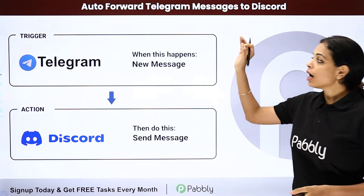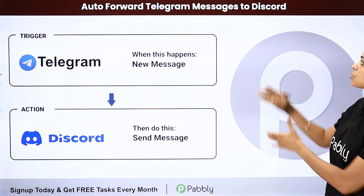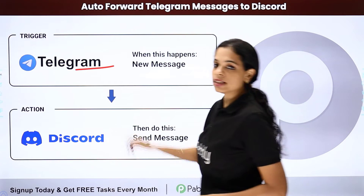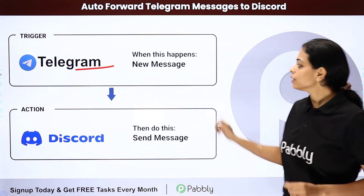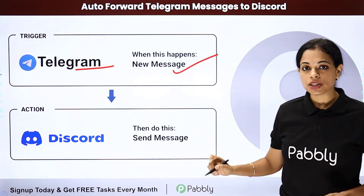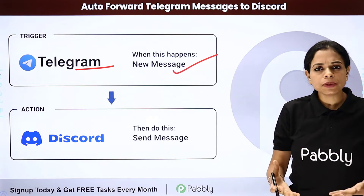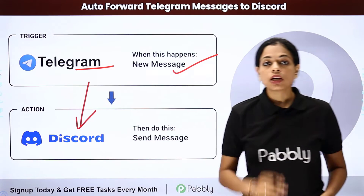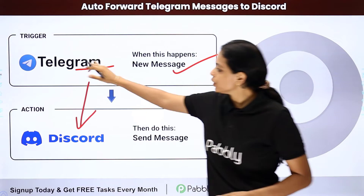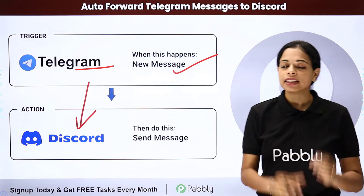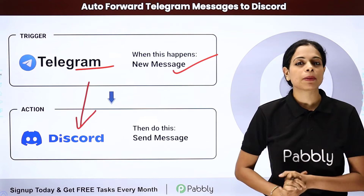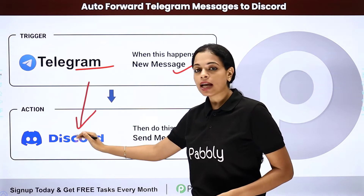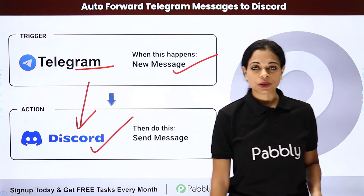In this video, we are going to see how to auto-forward Telegram messages to Discord. Let's say you are using Telegram as an instant messaging app and you want that every time there is a new message, the same message should be shared with your team or clients on Discord. For this, you will have to integrate these two applications, and you can do the same with the help of Pabbly Connect software. Here your trigger application would be Telegram and your action application would be Discord.